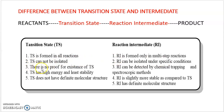There is no proof for the existence of a transition state — since we cannot isolate it, we cannot characterize it by different methods like spectroscopy. But since we can isolate reaction intermediates under specific conditions, we can detect them by chemical trapping as well as analyze them by spectroscopic methods.